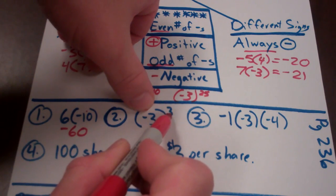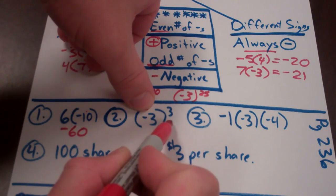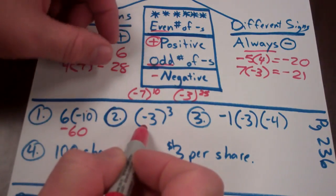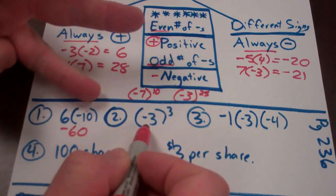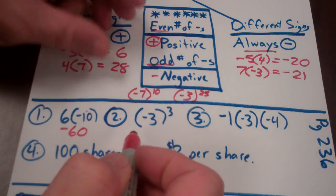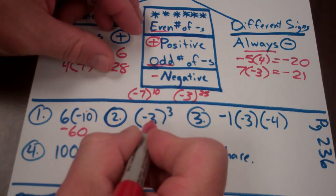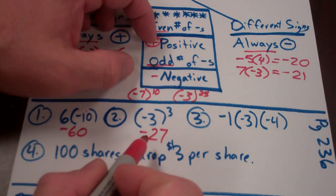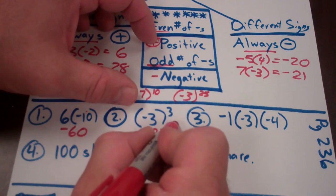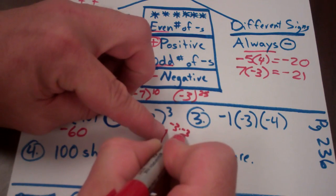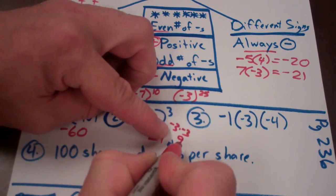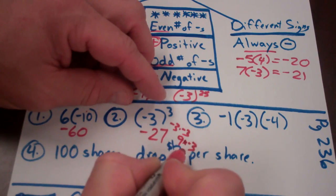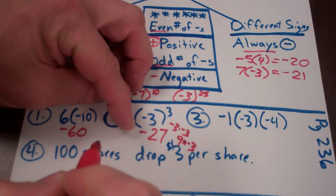Problem two: negative three to the third power stands for negative three times negative three times negative three. That means I have three negatives multiplied together — three is odd, so it's going to be negative. Three times three is nine, times three is twenty-seven, so the answer is negative twenty-seven. I could also do it step by step: negative three times negative three is positive nine (same signs), then nine times negative three becomes negative twenty-seven.